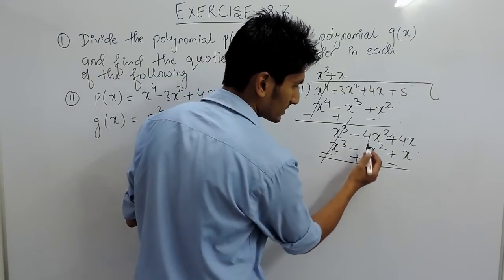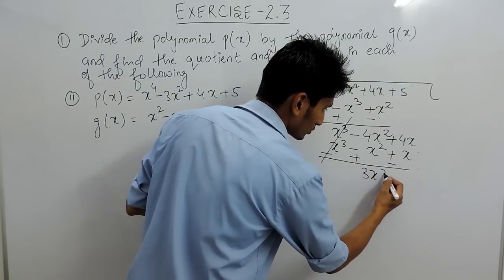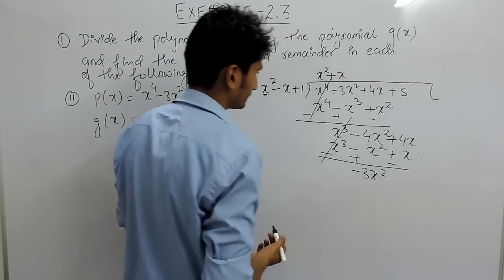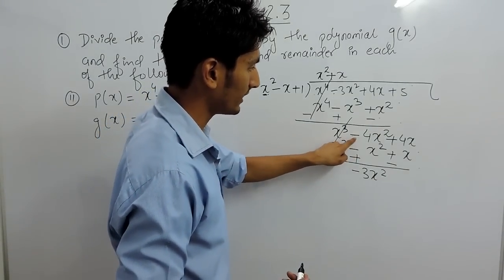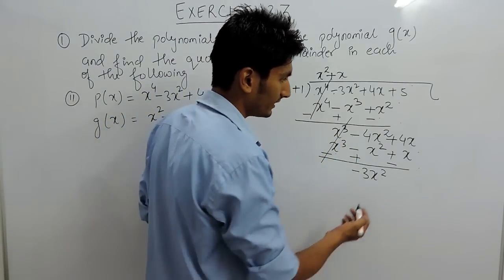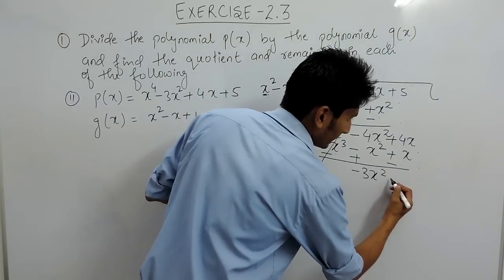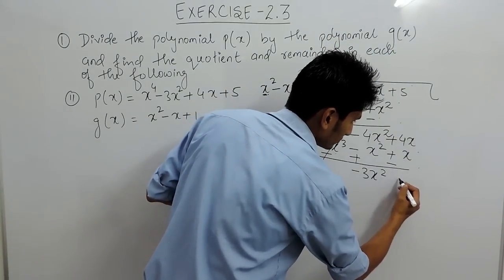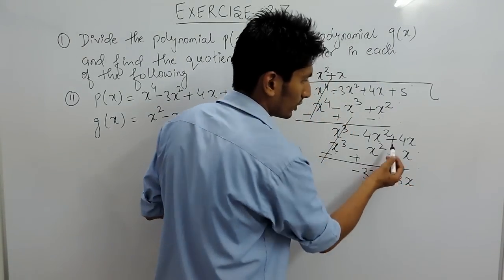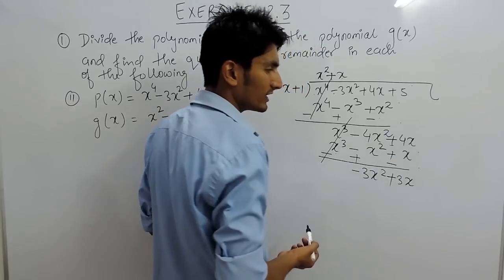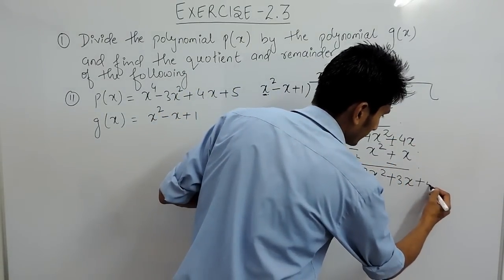So this positive and negative cancel out. Plus minus is minus, so 4 minus 1 is 3x squared with negative sign, because the greater value has a negative sign. And this positive and this negative again gives minus, so 4 minus 1 is 3x, with positive sign because the greater value has a positive sign. And this 5 can be copied here.